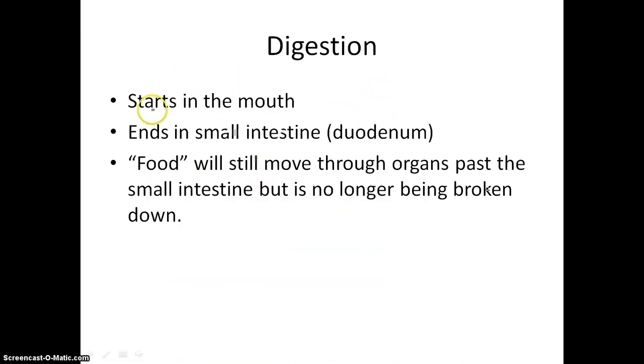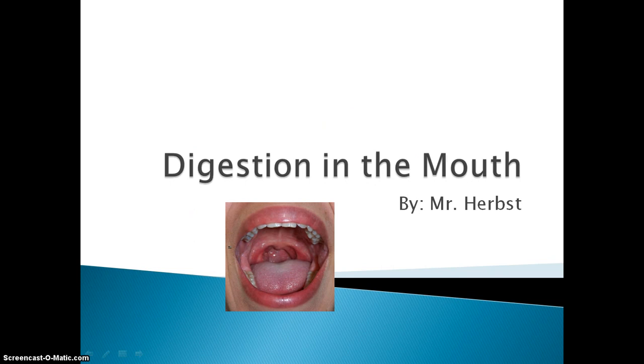So let's review. Digestion starts in the mouth. It ends in the small intestine, particularly it ends in the small intestine region called the duodenum. And food will still move through organs past the small intestine but is no longer being broken down. Primarily when I'm referring to that organ, I'm referring to our large intestine, also known as our colon. Our colon pretty much only absorbs water from the food that we ate. So that finishes our discussion on the overview of digestion. Our next video is going to be just focusing on the mouth. What type of digestion occurs in the mouth? Thanks for tuning in, folks. This is Mr. Herbst and I'm signing off.